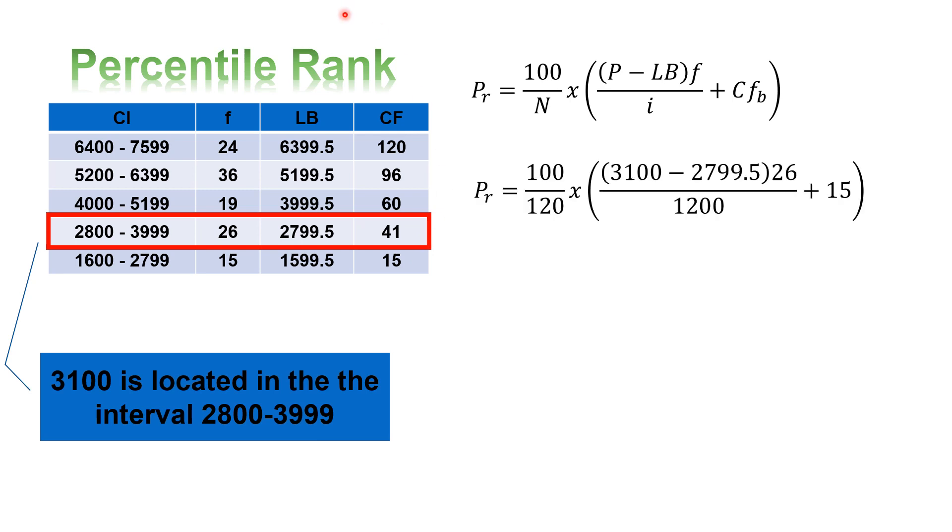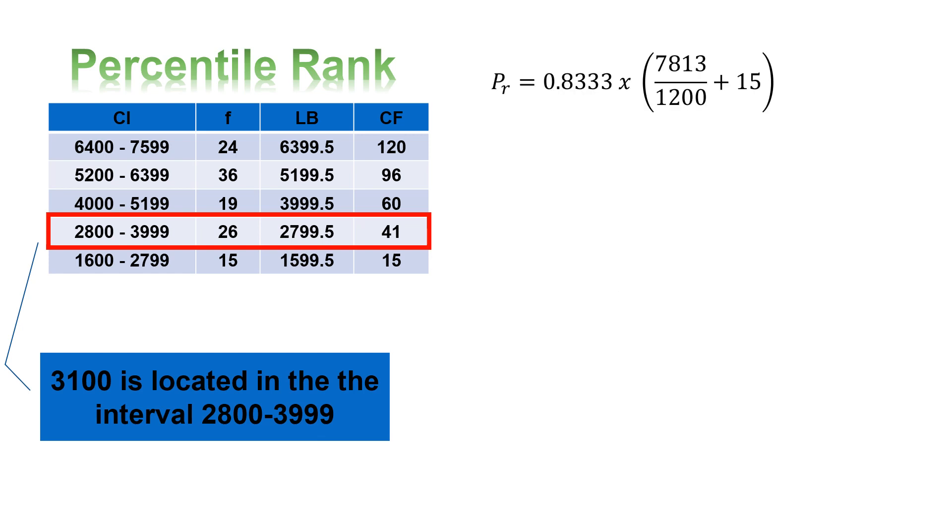To substitute our values, solve what's in the parenthesis first. So, 3,100 minus 2,799.5, that becomes 300.5. Multiply that to 26, that becomes 7,813 divided by 1,200. So, that will give us 6.5108. Add 15, you'll get 21.5108.